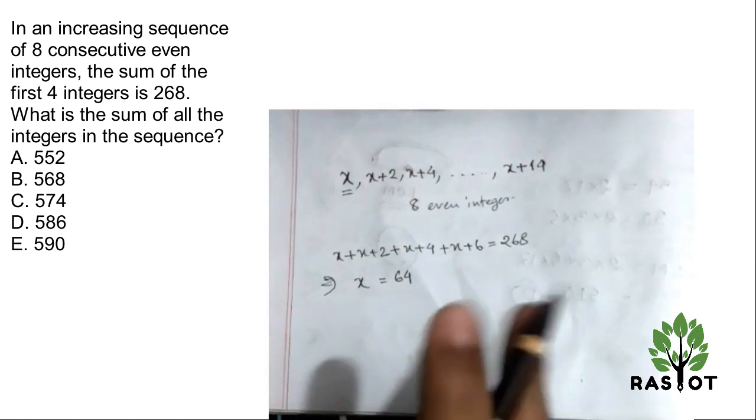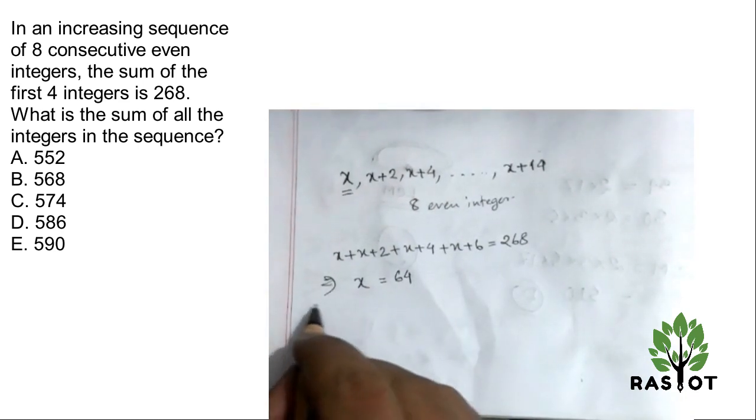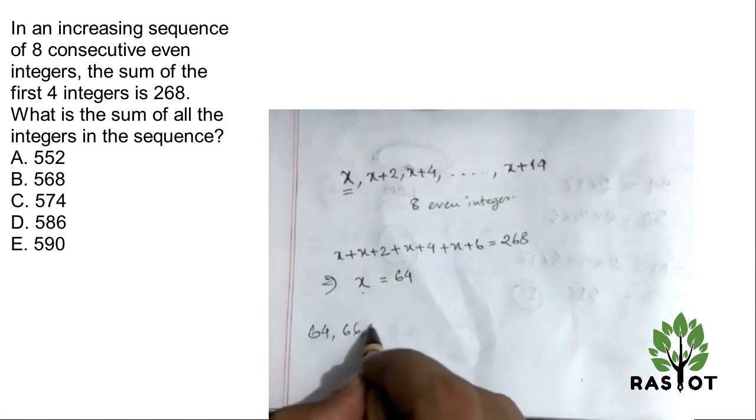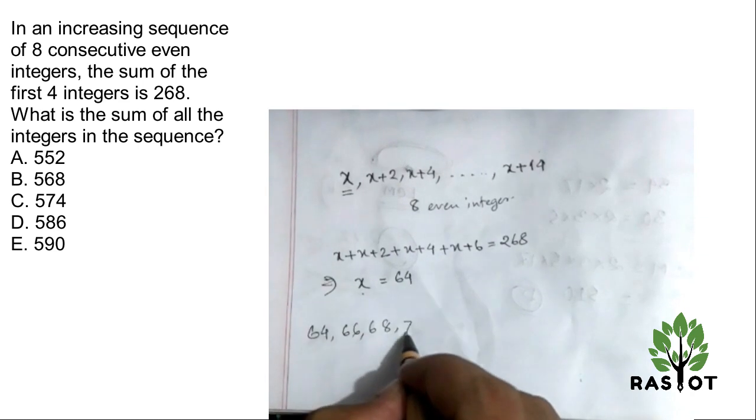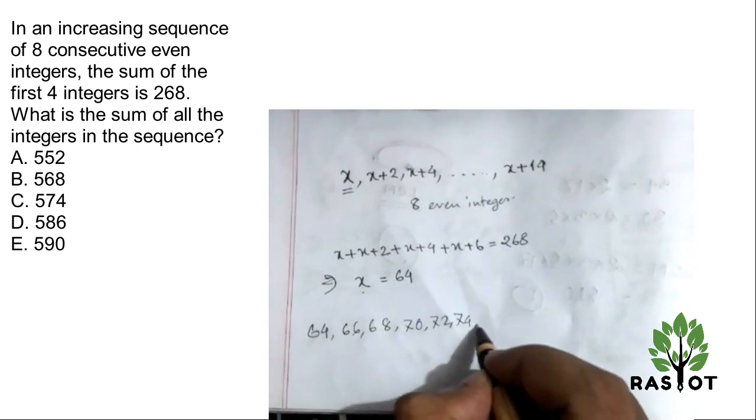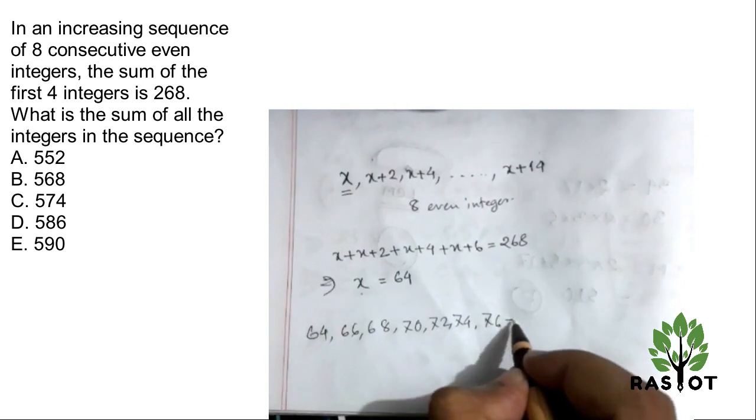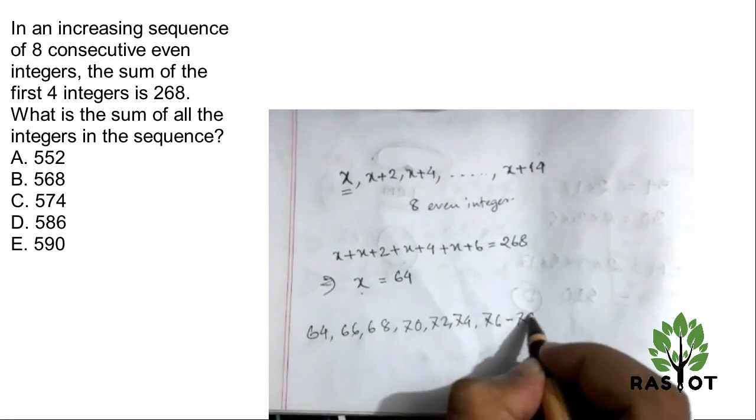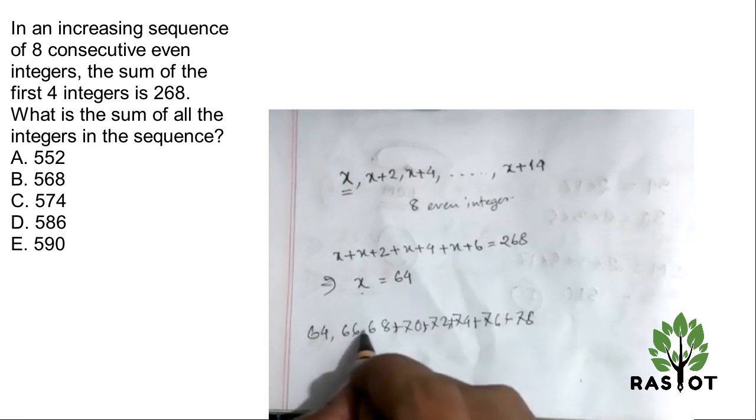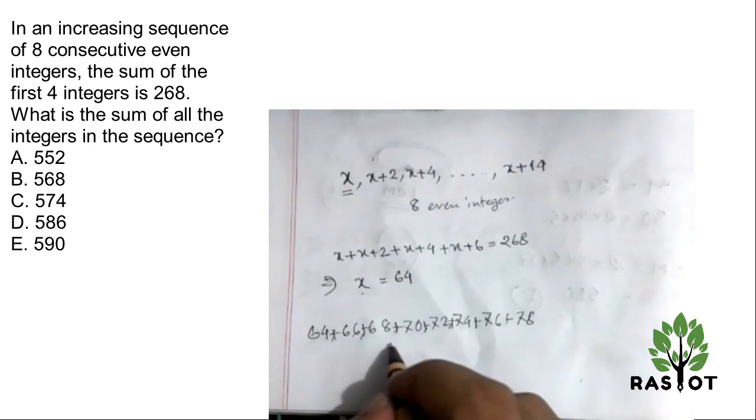Now we have the integers. So this is incrementing by 2. The first one is 64, and then we have 66, 68, 70, 72, 74, 76 and 78.